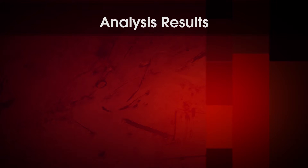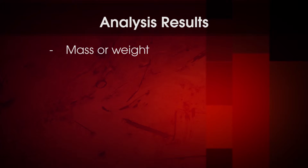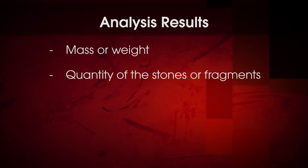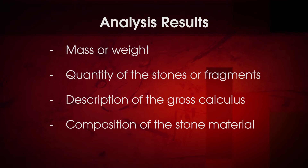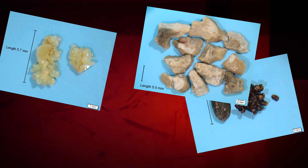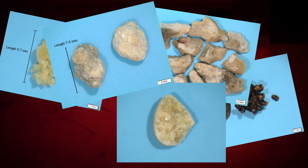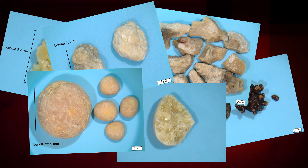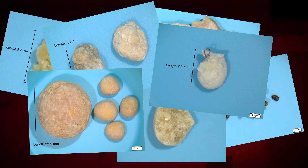Kidney stones that are passed in the urine or surgically removed should be analyzed to determine their chemical composition. Results for stone analysis include mass or weight, quantity of the stones or fragments, and a description of the gross calculus in addition to the composition of the stone material. Some laboratories offer a photograph of the stone. Although a picture is not necessary for effective treatment, it can be meaningful for the health care provider to share with the patient, and is useful in the case of unusual stone components or artifacts.